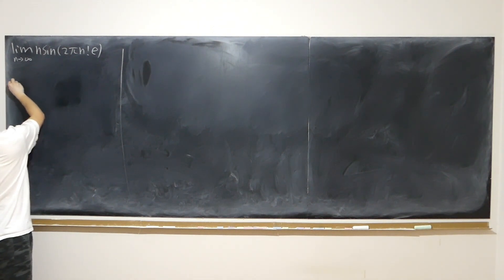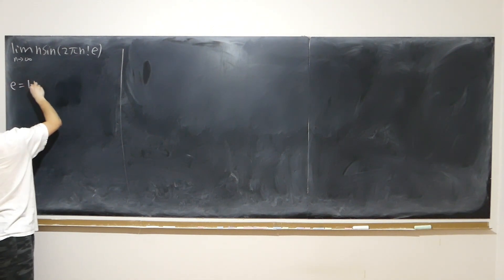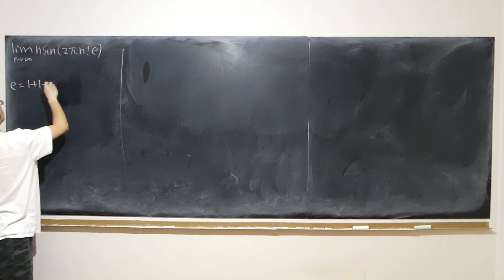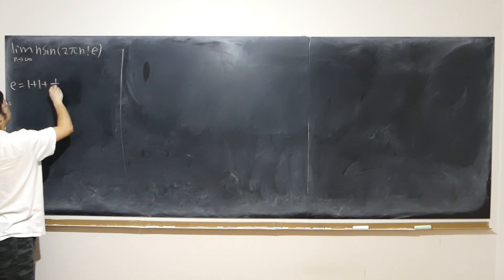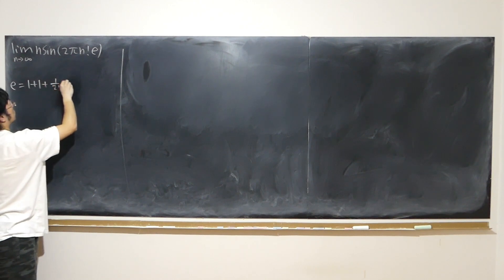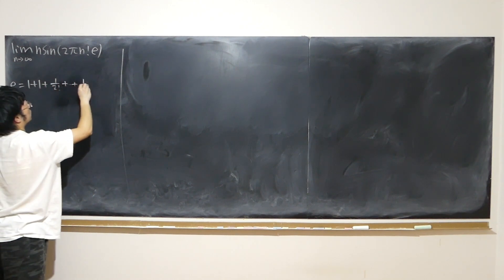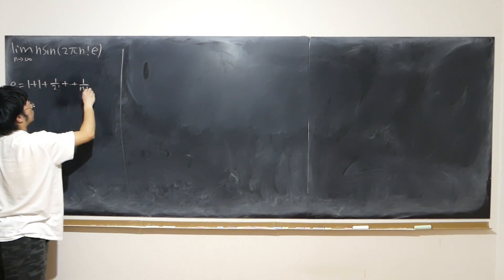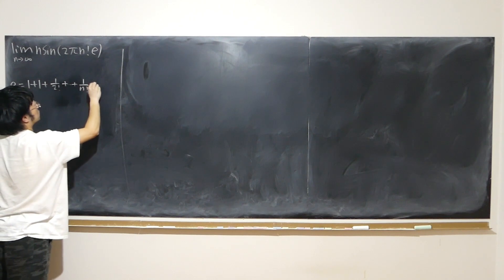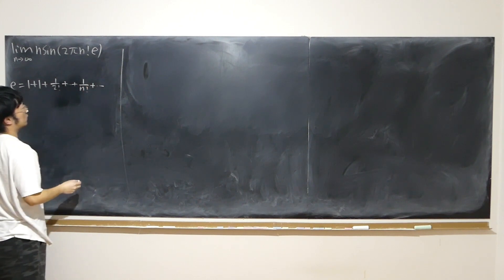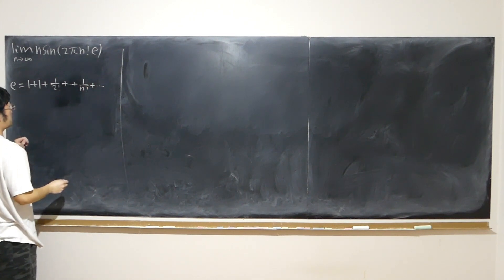One of the definitions of e is: 1 plus 1 plus 1 over 2 factorial plus all the way up to 1 over n factorial, all the way to infinity.